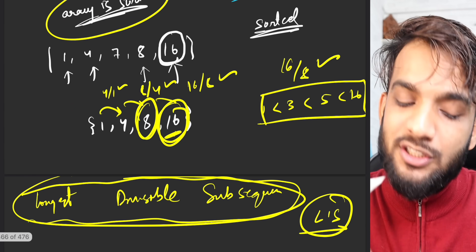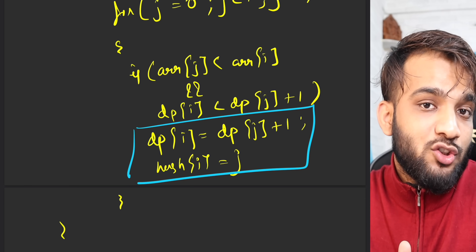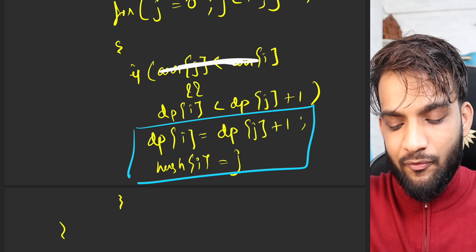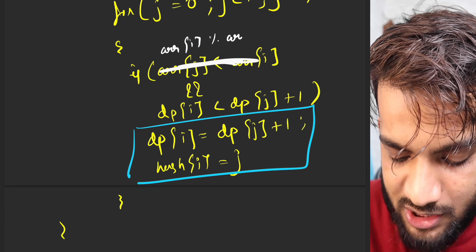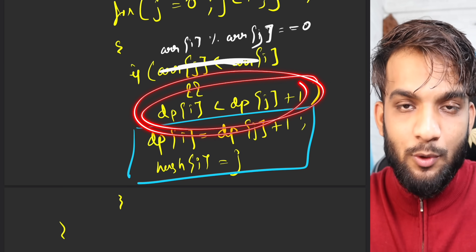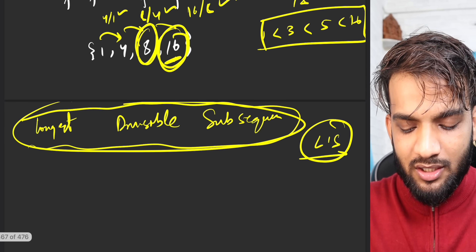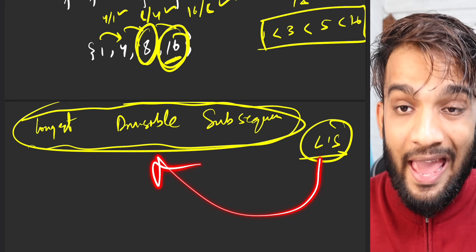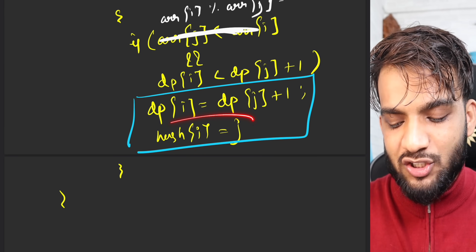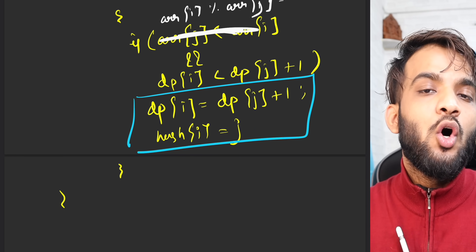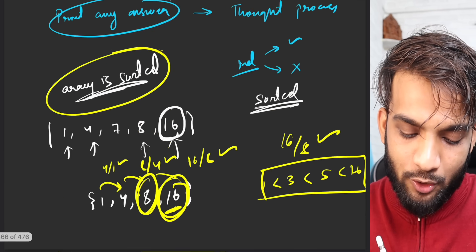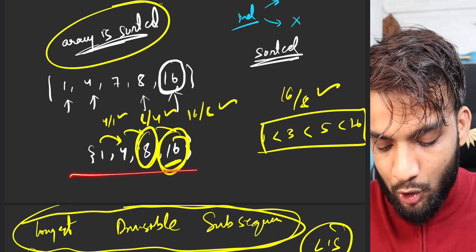Since the array is sorted, I just need to change the condition: instead of array[j] < array[i], I check if array[i] % array[j] == 0 (i.e., array[i] is divisible by array[j]). The rest of the logic — checking length, updating dp[i] = dp[j] + 1, storing hash[i] = j — stays the same. The hash array lets me trace back the longest divisible subset. Since any answer is accepted, this works perfectly.